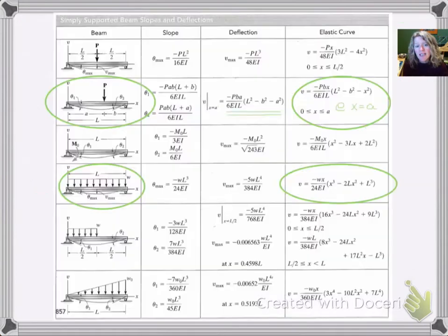We're going to find the equations in terms of X. Beam one is the simply supported beam with uniform load. The displacement is negative WX over 24 EI times the quantity X cubed minus 2L X squared plus L cubed.